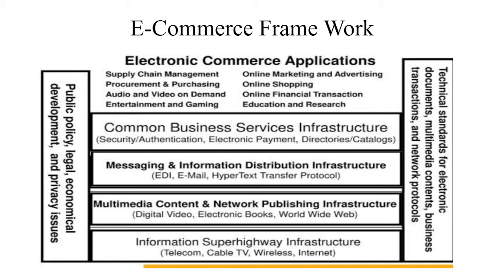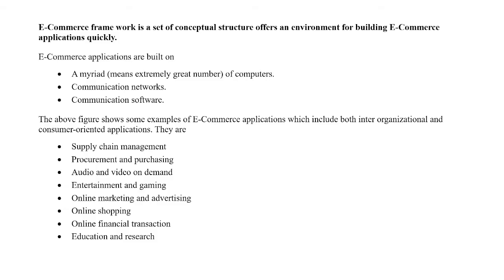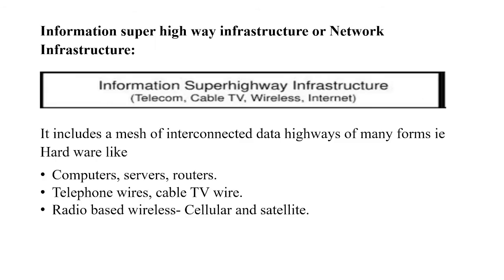Above all these infrastructures, eCommerce applications are built very quickly. The first layer is called Information Superhighway Infrastructure, and we also call this layer Network Infrastructure. This layer majorly focuses on constructing the network. A network is a collection of a huge number of computers interconnected with each other to establish communication. To interconnect these computers we may use telephone wires, cable TV wires, or radio-based wireless such as cellular or satellites. To establish communication, we use routers and servers, and that is why this layer majorly focuses on hardware.